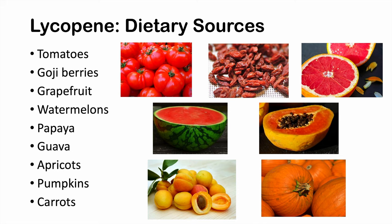As you can see, a lot of these dietary sources have a red or orange coloration, and that comes from the lycopene, as it is the pigment that gives them their color.